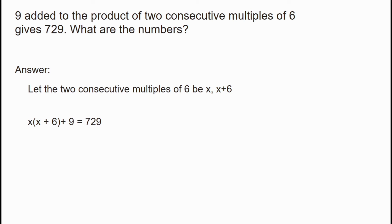Expanding: x into x is x squared, and x into 6 is 6x. So we get x squared plus 6x plus 9 equals 729.